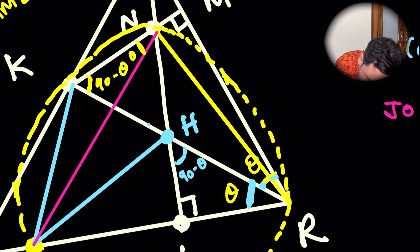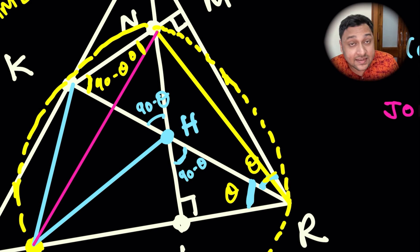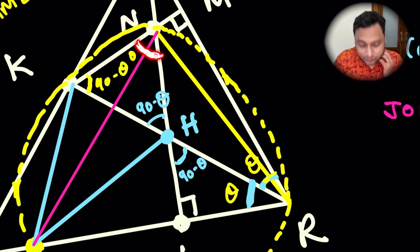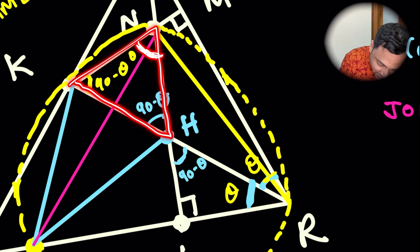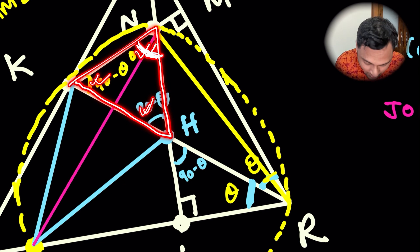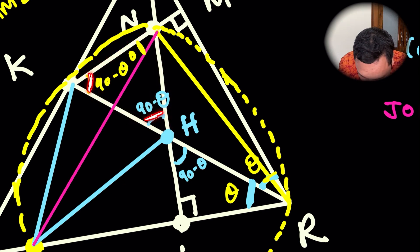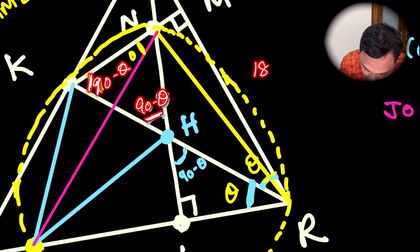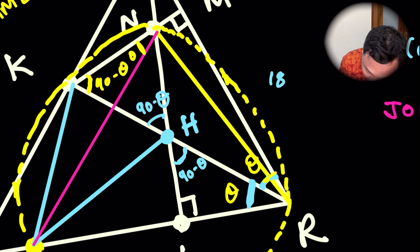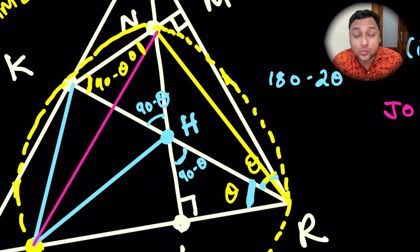One more thing is, this is 90 minus theta as well. Why? Because this is a little right angle triangle. This angle is theta, so this is 90 minus theta. So that means this angle must be 90 minus theta. Which means this total angle is 2 theta. Because in this triangle, these three angles should add up to 180 degrees. These two base angles add up to 90 minus theta plus 90 minus theta, that's 180 minus 2 theta. So this angle is 2 theta.